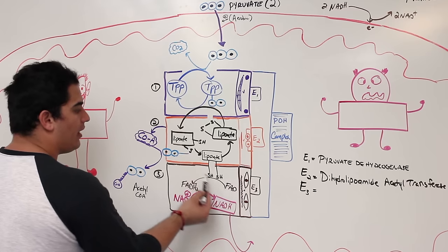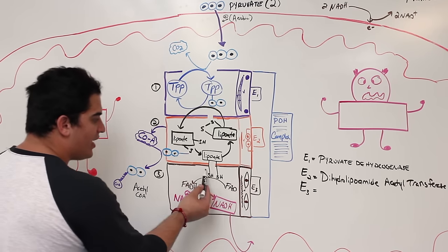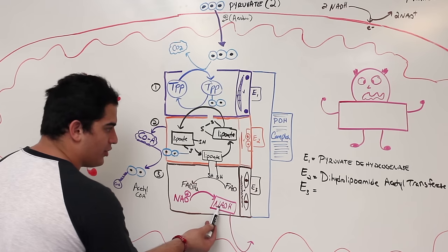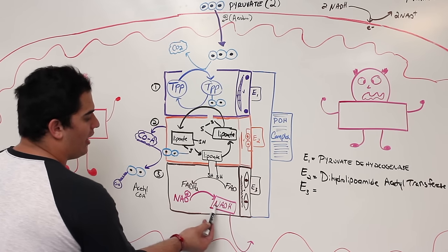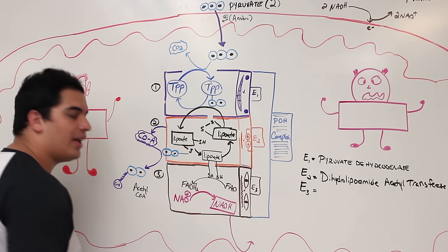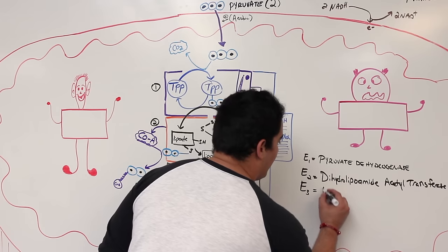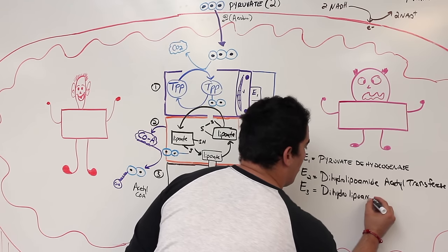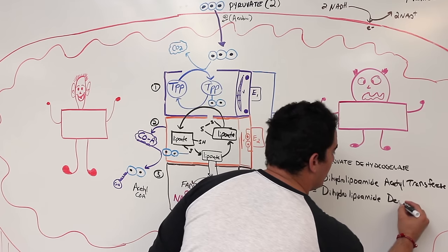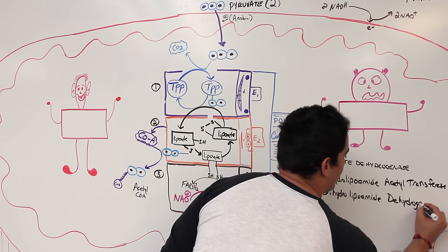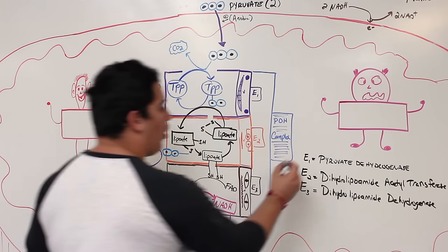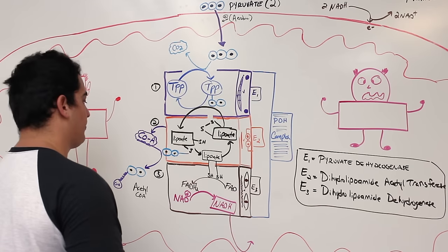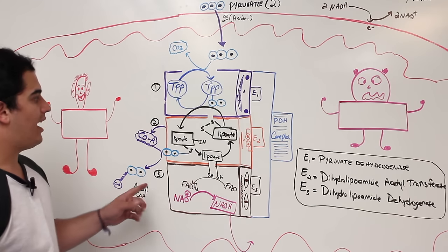Enzyme three takes the hydrides from the lipoate and transfers them onto NAD⁺ to form NADH — so it's called dihydrolipoamide dehydrogenase. All three enzymes together make up the pyruvate dehydrogenase complex, and together they generate acetyl-CoA.